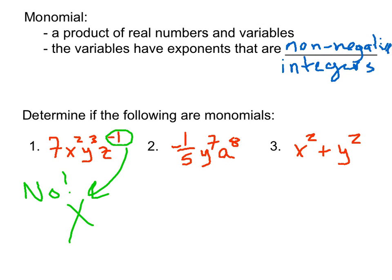For this next one we have a real number times a variable with a non-negative integer exponent, times another variable with a non-negative integer exponent. So this is good — this is yes. This is the definition that we are going to use. This would be a monomial.